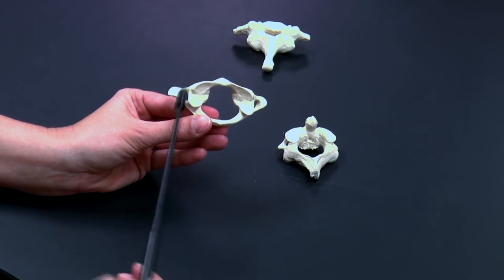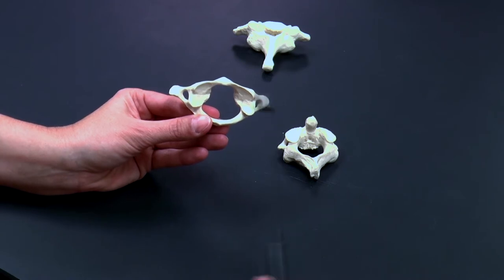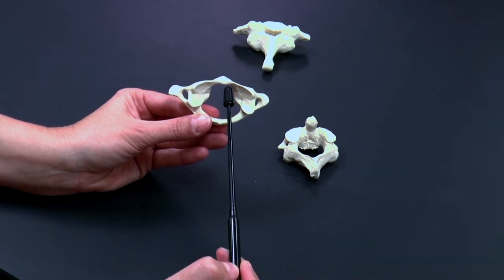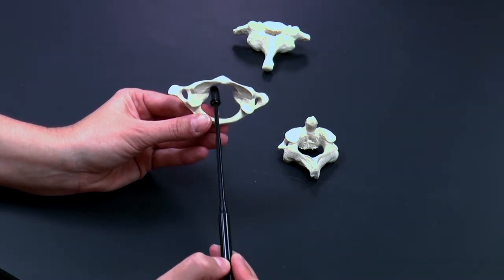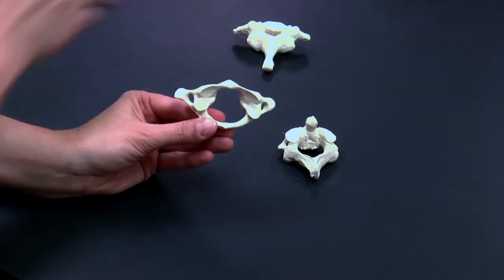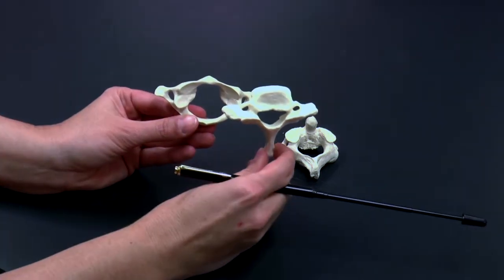And again you can see those transverse foramina still, so we know this is a cervical vertebrae. But you'll notice what the cervical vertebrae is missing is the body. It doesn't have that body that supports the weight.